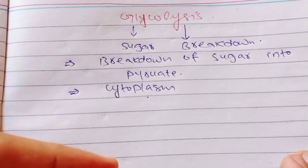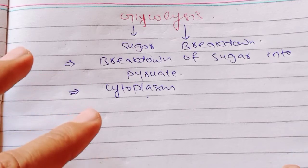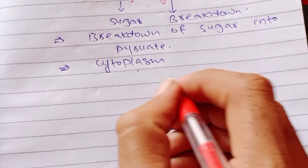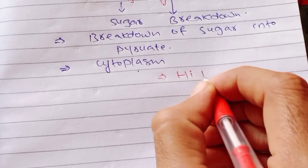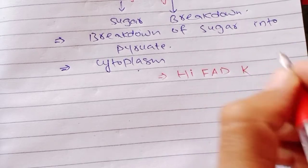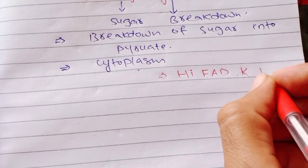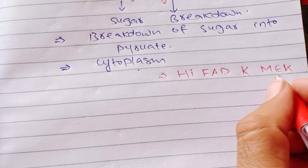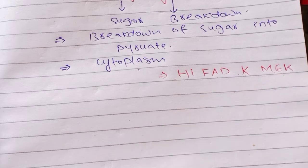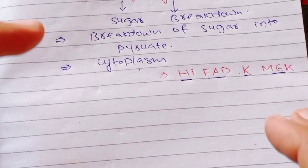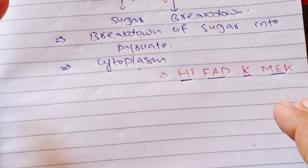Now we will discuss each and every step of glycolysis — how the reactions occur, what the phases are, and what enzymes catalyze these reactions. For remembering each enzyme, you have to remember the mnemonic: H-I-F-A-D-M-A-C. These letters represent the enzymes we will discuss.